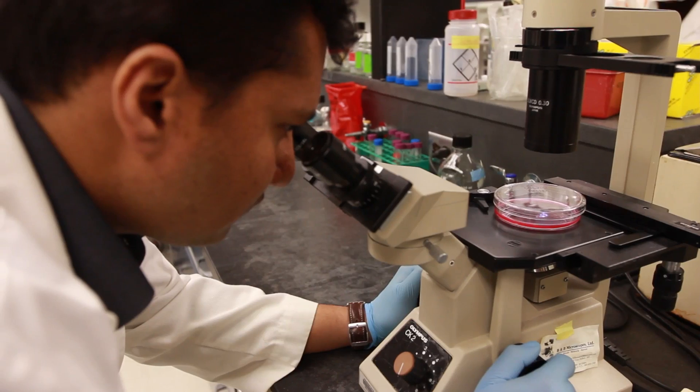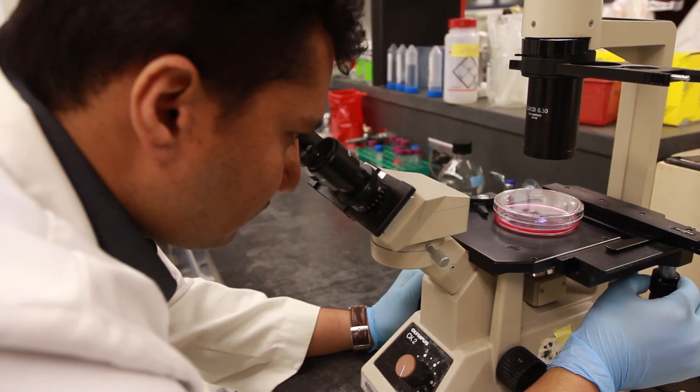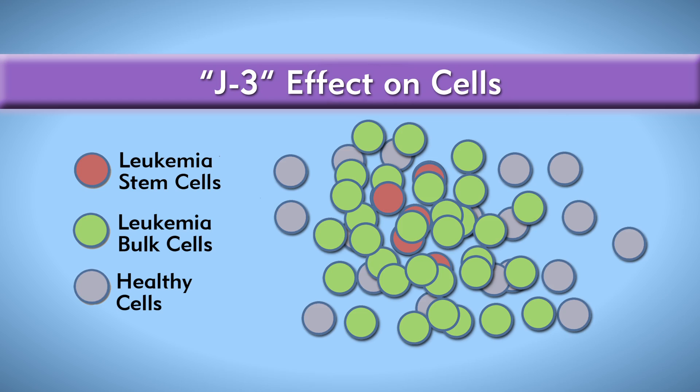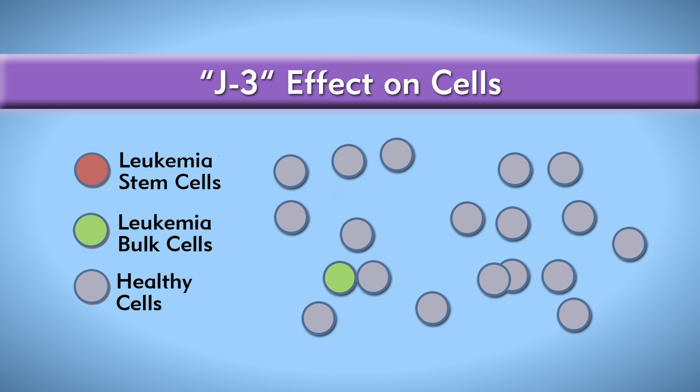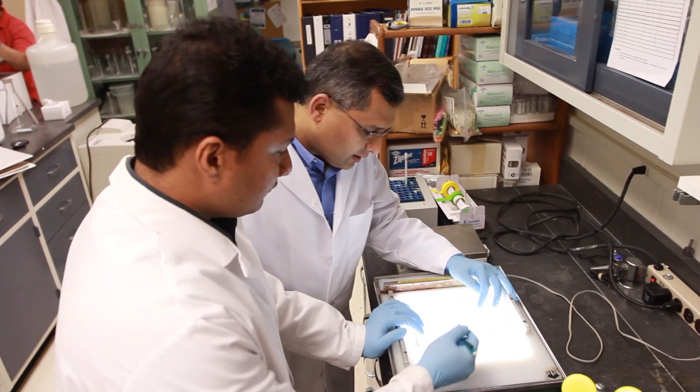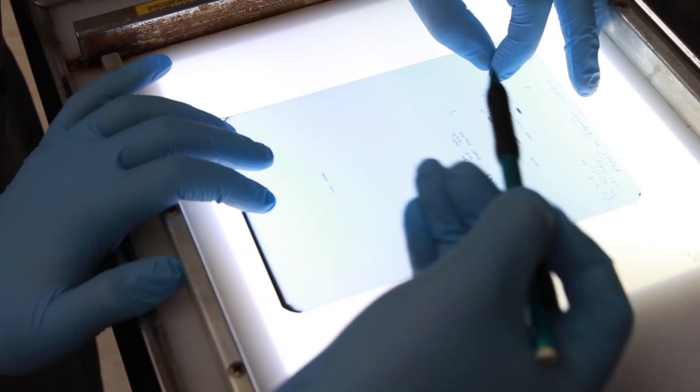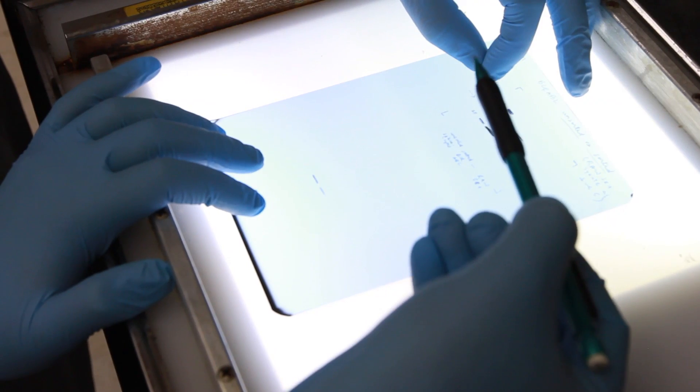Initial investigations indicate that J3 tells the leukemia stem cells to destroy themselves, and leaves the healthy cells alone every single time. In the petri dish and in mice, the leukemia cells die and do not come back.